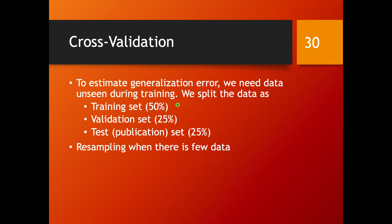A suggested split might be something like 50/25/25%, but this is certainly not set in stone — it depends a lot on the case. Sometimes you might go for 70/30, and within that maybe 50 and 20. In many cases where you have relatively little data, you would like as much as possible for training, so you might go to 80/20, with that 80 split into perhaps 60 and 20. The exact proportions depend a lot on the application and on the volume of data you have available for training.